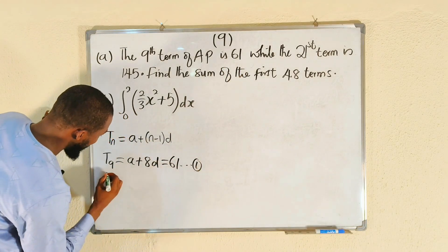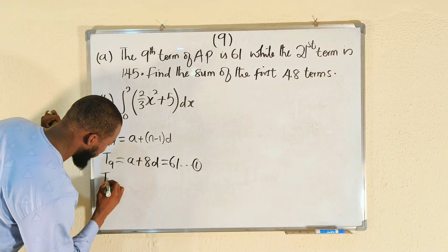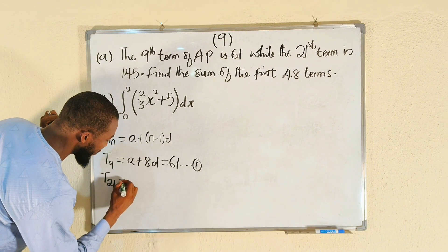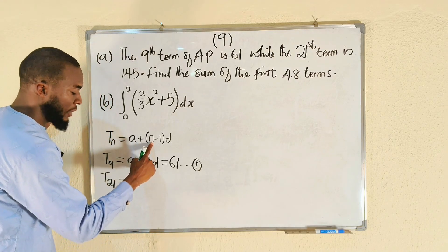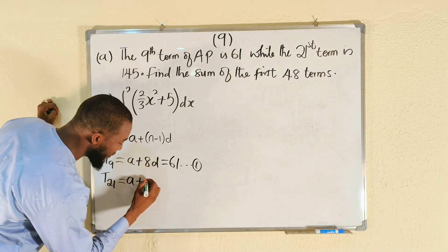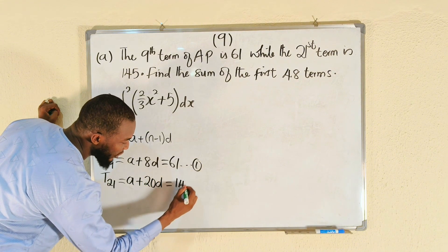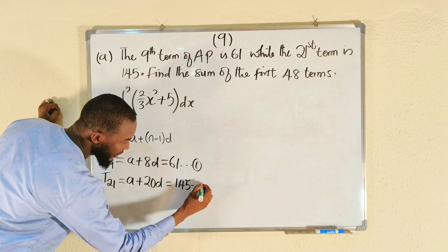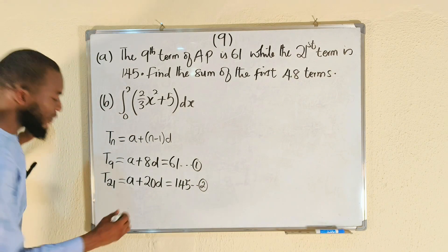Then term number 21 is given as a plus 21 minus 1, which is 20, multiplied by d. This is equal to 145 according to the question, and this is our second equation. So I would like to subtract.